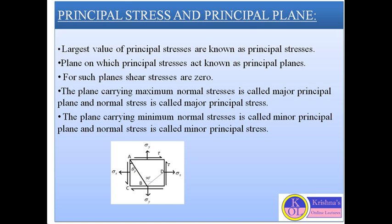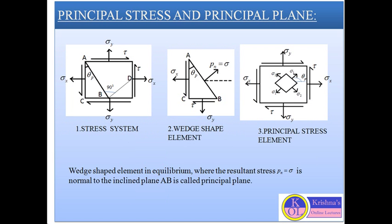Here we are considering only two principal stresses, denoting the major principal stress by sigma 1 and the minor principal stress by sigma 2. In diagram 1, you can see a stress system where the stress element is subjected to different stresses: normal stresses sigma x in the x direction and sigma y in the y direction, and shear stress tau. In the second diagram, you can see a wedge-shaped element.